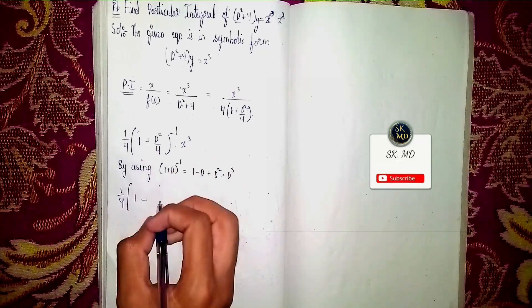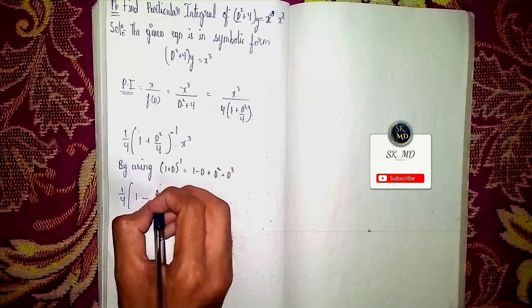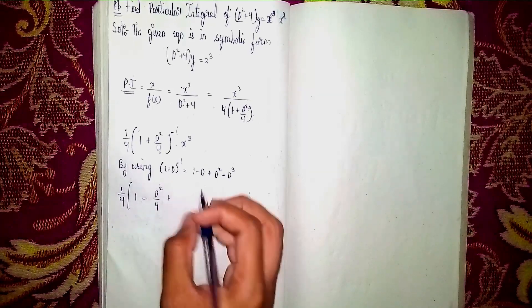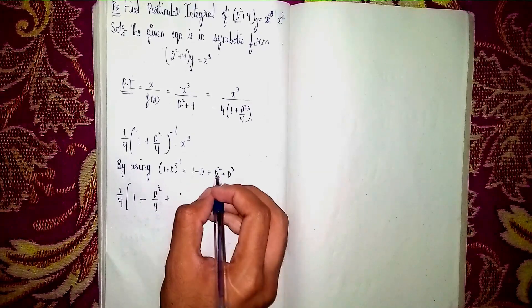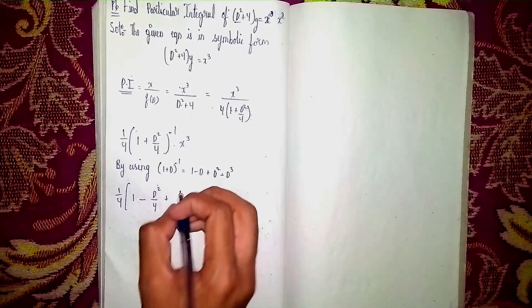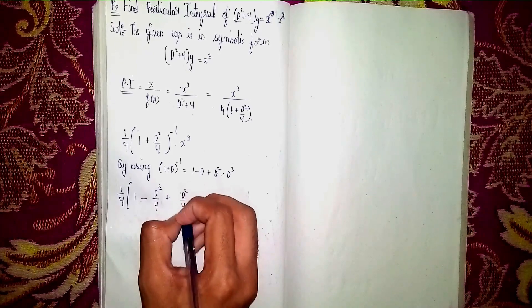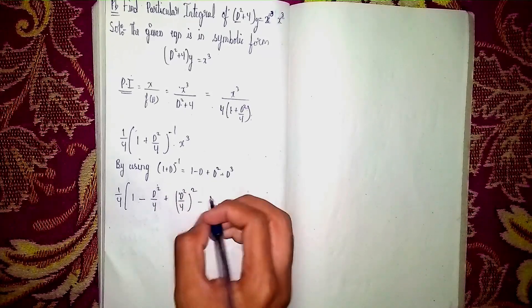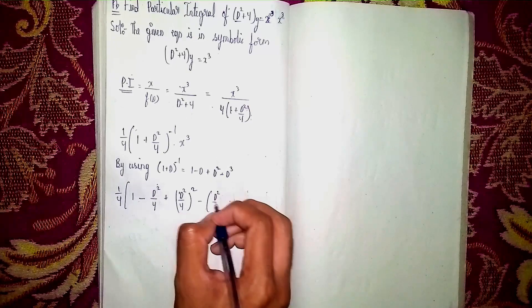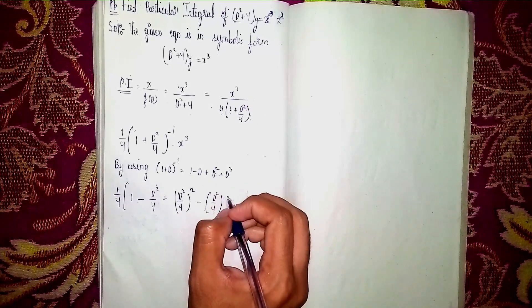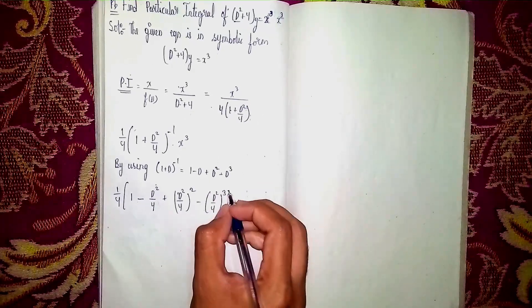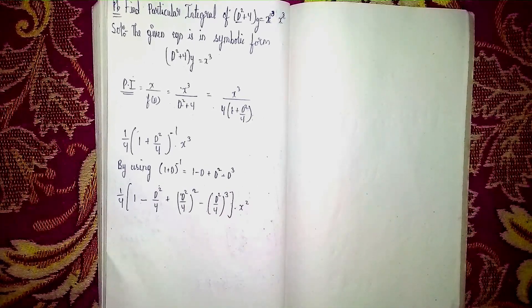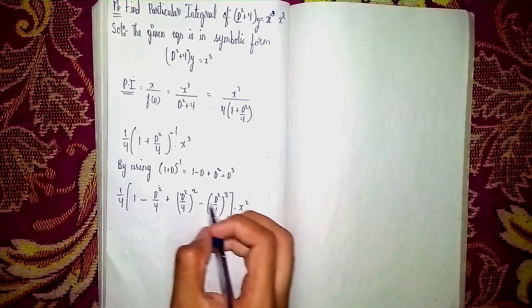So we write: (1/4) × [1 − D²/4 + (D²/4)² − (D²/4)³] × x³. Now I have to neglect certain terms. The term (D²/4)² gives D⁴, and (D²/4)³ gives D⁸.